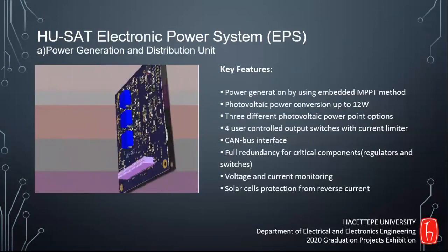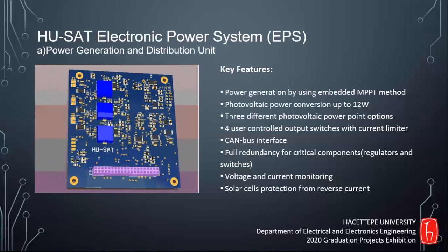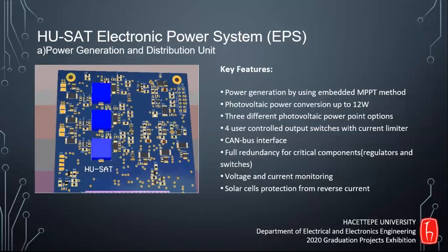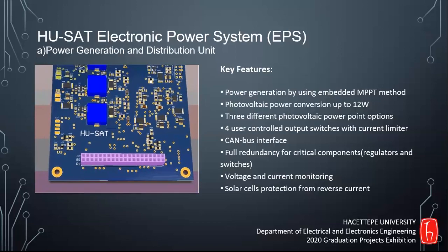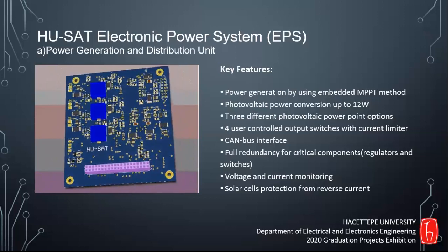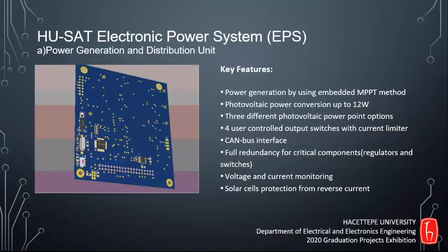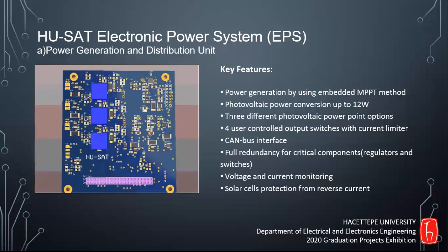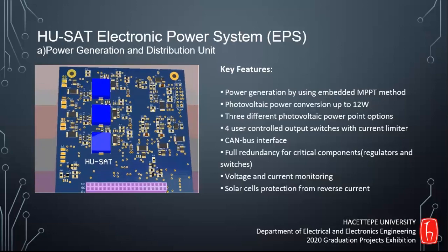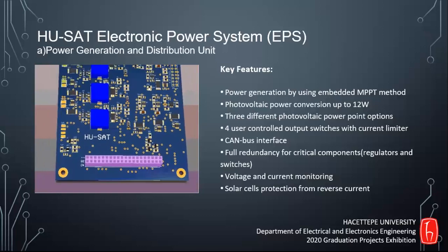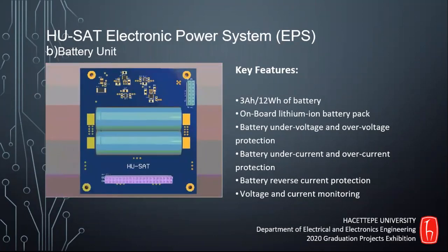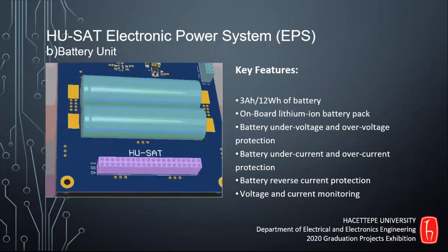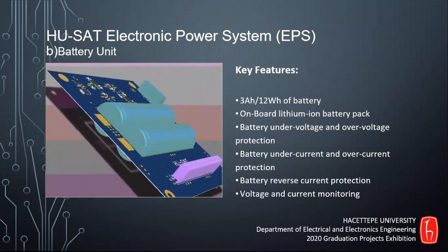The electrical power system consists of two units. One is the power generation and distribution unit, and the other is the battery unit. The power generation and distribution unit tries to maximize power by using maximum power point tracking from the solar panels, which is the best feature of the system. It also controls the power flow across all systems. To achieve a more reliable system, critical components such as regulators and switches are doubled for redundancy. The battery unit is responsible for charging and discharging the battery and shares information related to the health of the battery.